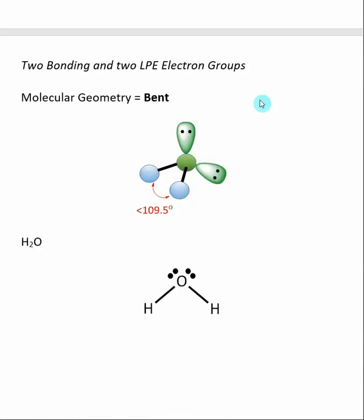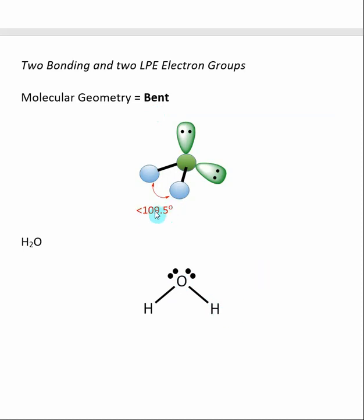With four groups of electrons where two are bonding and two are lone pairs, the molecular geometry is called bent. Water has a molecular geometry of bent — the central oxygen has two bonding groups and two lone pair groups, giving four total electron groups. Because two are lone pairs, the molecular geometry is bent. Just like trigonal pyramidal, the bond angle is less than 109.5 degrees. The hydrogen-oxygen-hydrogen bond angle in water is somewhere less than 109.5 degrees, because the lone pair electrons push and tighten this bond angle.